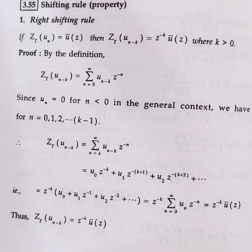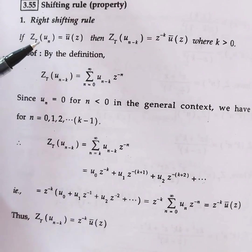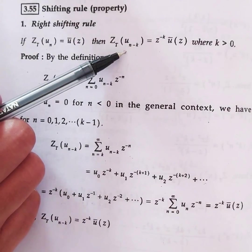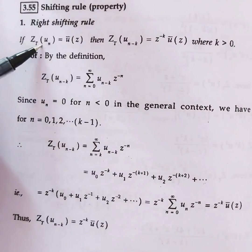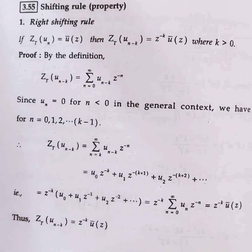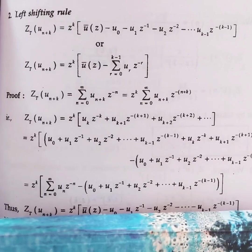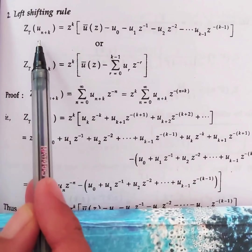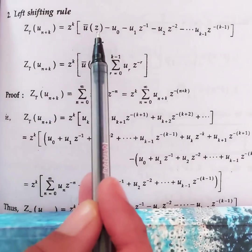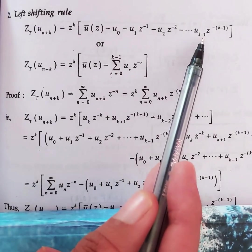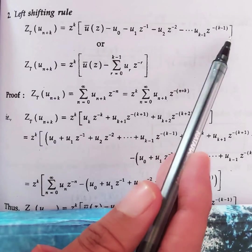Similarly, if I know z-transform of u(n), I can find z-transform of u(n+k) — that is the left shifting rule. The left shifting rule states: if z-transform of u(n) is known, then z-transform of u(n+k) is z^k·ū(z) minus u(0) minus u(1)·z^(-1) minus u(2)·z^(-2) and so on, up to u(k-1)·z^(-(k-1)).